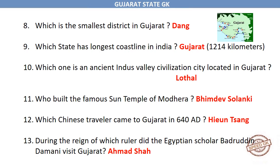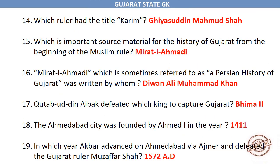Who built the famous Sun Temple of Modhera? Bhimdev Solanki. Which Chinese traveler came to Gujarat in 640 A.D.? Hayan Tsang. During the reign of which ruler did the Egyptian scholar Badruddin Damani visit Gujarat? Ahmad Shah. Which ruler had the title Karim? Ghiyasuddin Mahmud Shah.